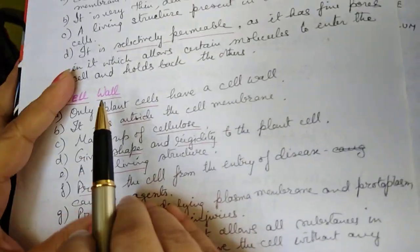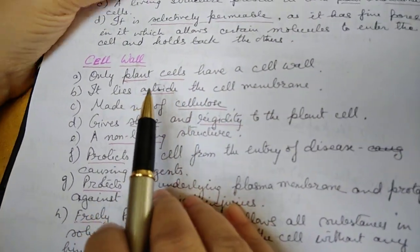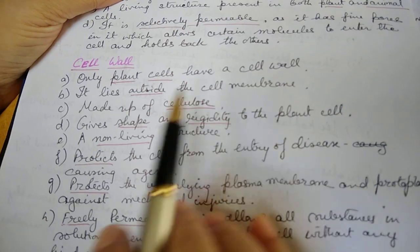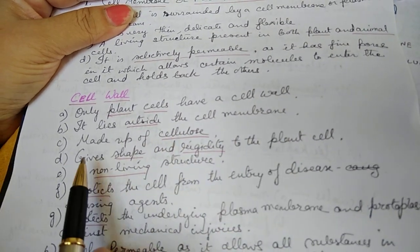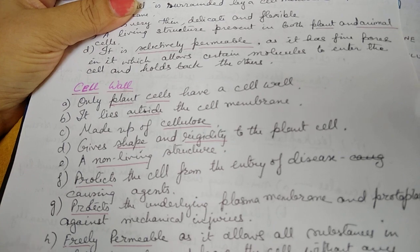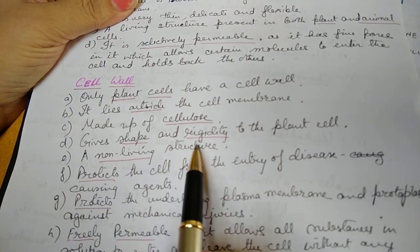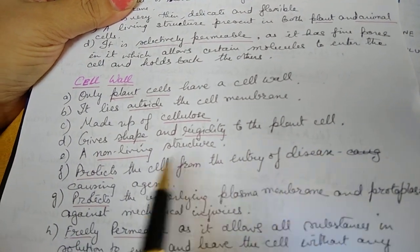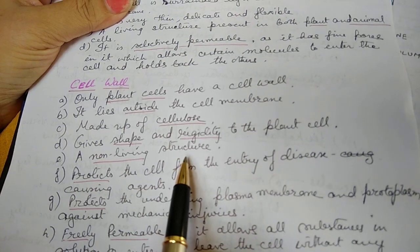Now we come to cell wall. Only plant cells have a cell wall. It lies outside the cell membrane. It is made up of cellulose. It gives shape and rigidity to the plant cell. It's a non-living structure unlike the cell membrane.